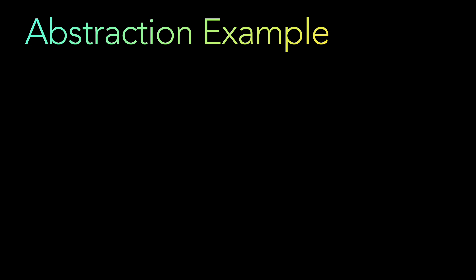Another way, as mentioned, is through interfaces. In Java you define an interface with the keyword 'interface' and you define a method — say, make sound. In an interface, unlike in an abstract class, you cannot add any methods with concrete implementation. In an abstract class you can still add methods with their own implementation, but in an interface you cannot.